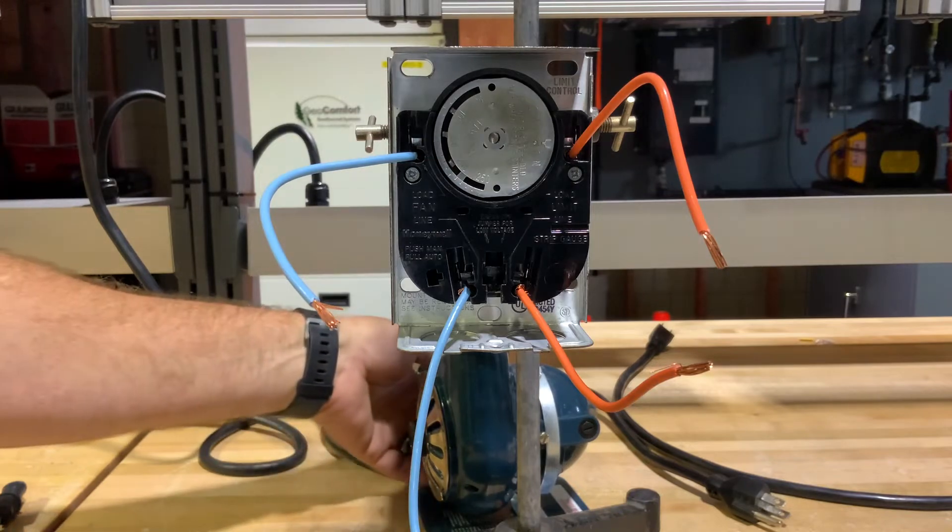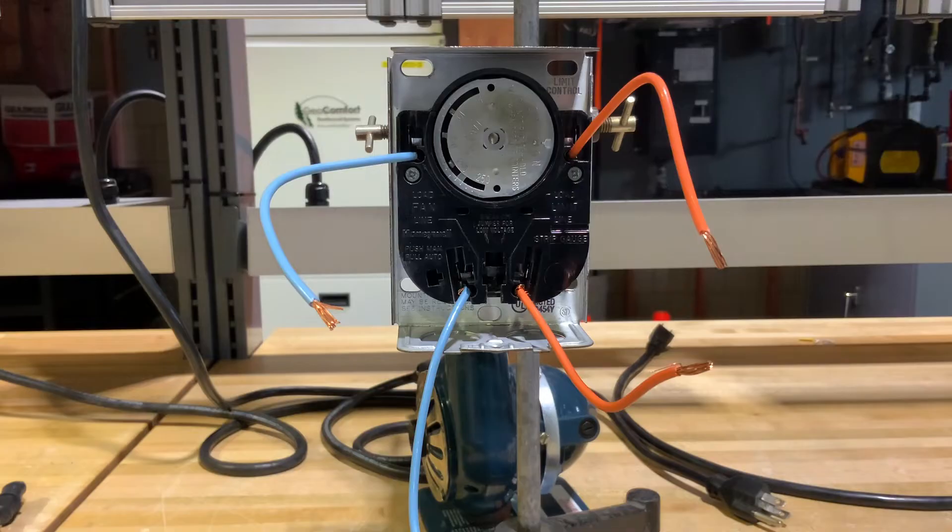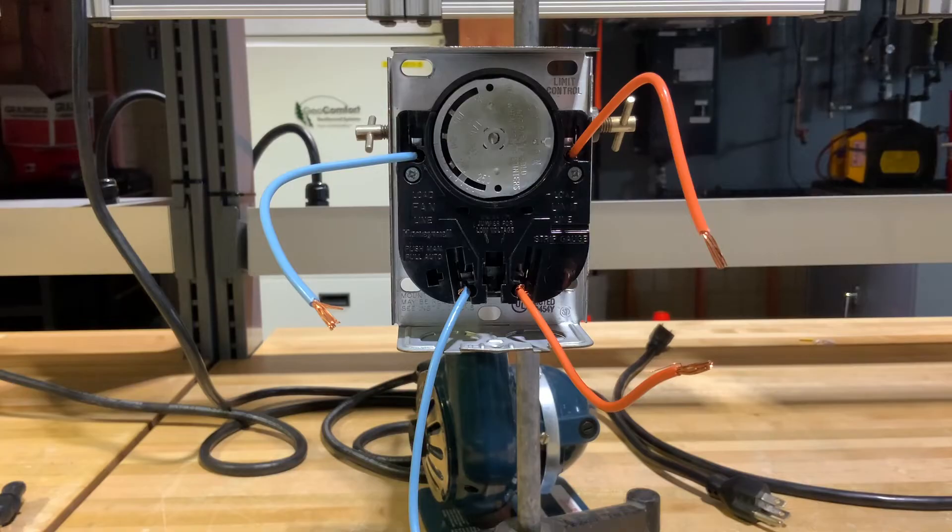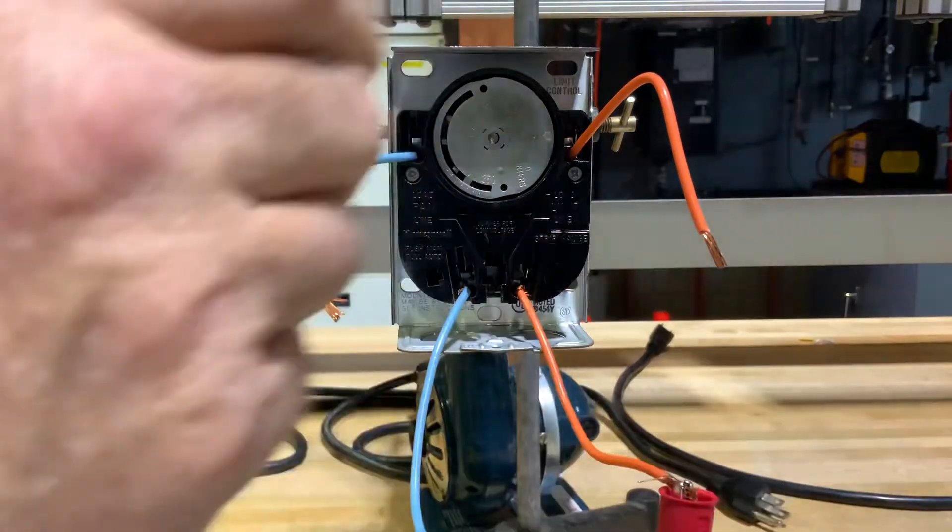Now if we look at the face of this, we can see how that was spinning - there's numbers on there. Now that that heat is shut off, it's cooling back down and this will actually reset through the limit.